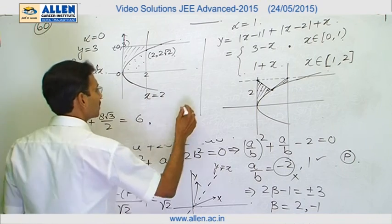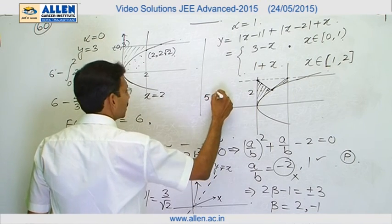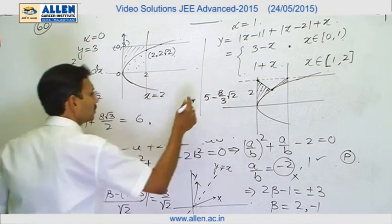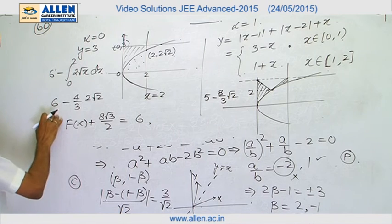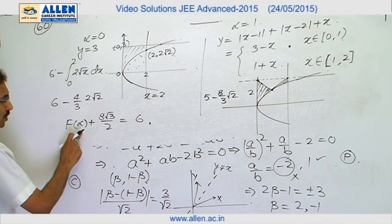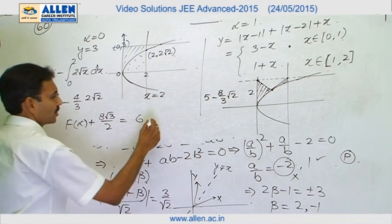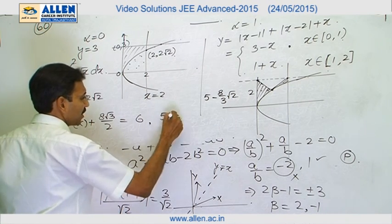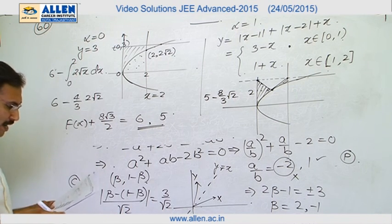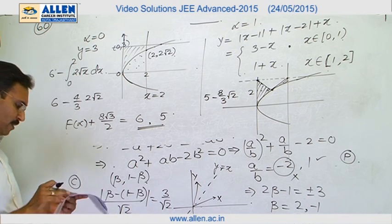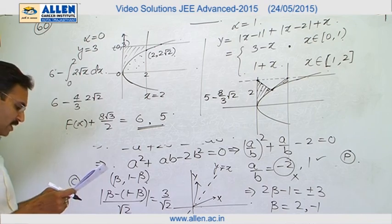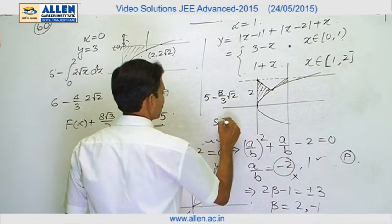So the answer is 8√2/3 minus 1, written as 5 minus 8√2/3 approximately. Subtracting 1 from the previous result, if I calculate this quantity it will be 5. So these are the two possible values, and the right options will be 5 and 6. So S and T are the right answers.